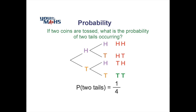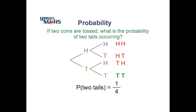Now let's solve the same problem using complementary events. The complement of getting two tails is everything else — zero tails or one tail. From our diagram there is one case of getting no tails and two cases of getting one tail, giving a total of three. So the probability of not getting two tails is 3 out of 4. Then 1 minus 3 over 4 gives us 1 over 4 — the same result as before. The complement of one event is everything else, and the probabilities of two complementary events always add up to 1.